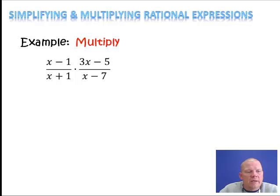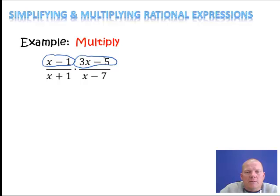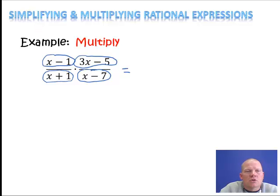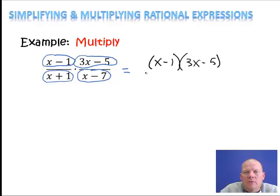Let's look at another example. x minus 1 is already factored, 3x minus 5 is already factored, x plus 1 is already factored, and x minus 7 is already factored. Going through to cancel, there's x minus 1 on top but not in the bottom, 3x minus 5 on top but not in the bottom — nothing cancels. So when I multiply, I just put them together and write it as x minus 1 times 3x minus 5, over x plus 1 times x minus 7.